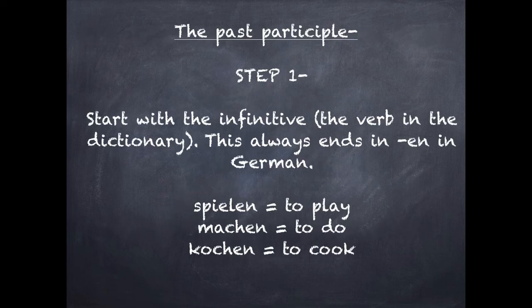That's the first step. For the second step, we need to find something called the past participle. Step one: we start with the infinitive — this is the verb you find in the dictionary, and in German it always ends in -en. Some examples: spielen (to play), machen (to do), and kochen (to cook).